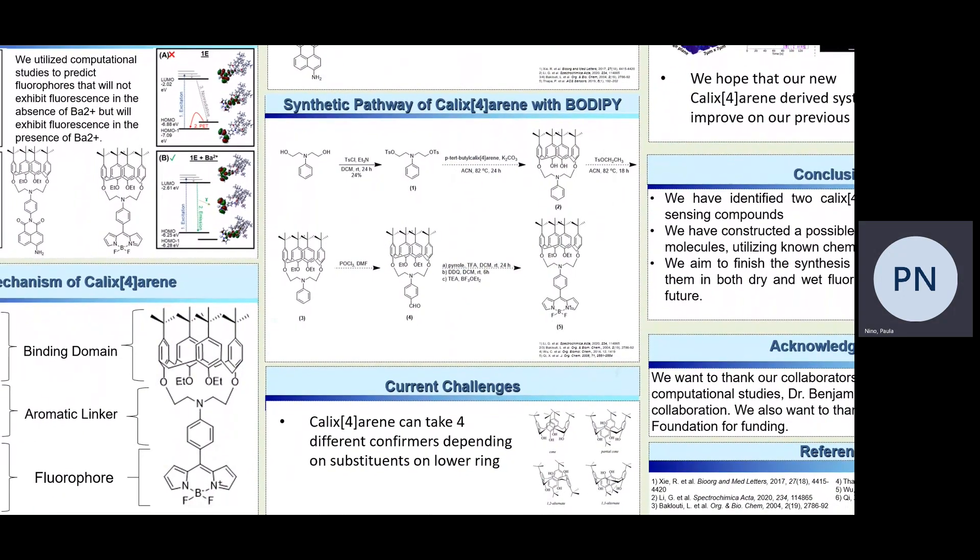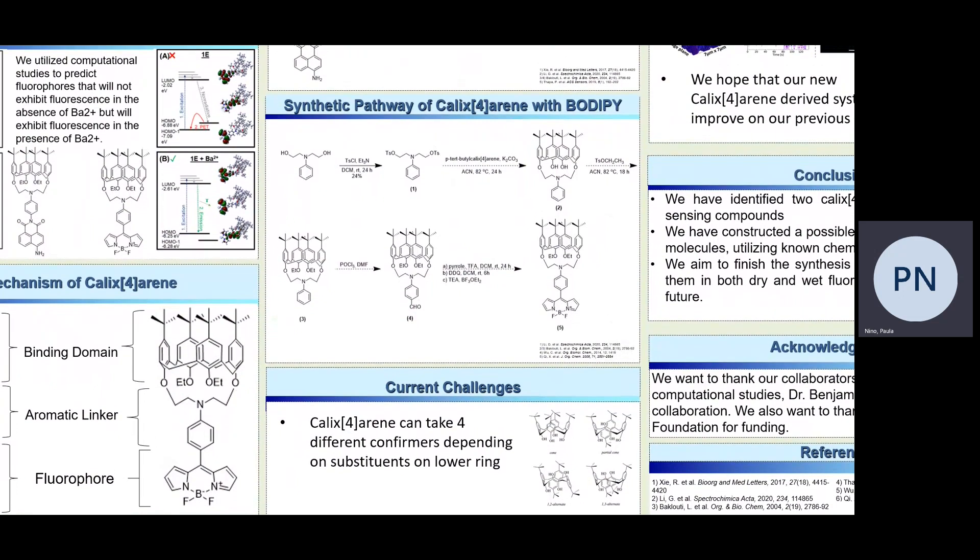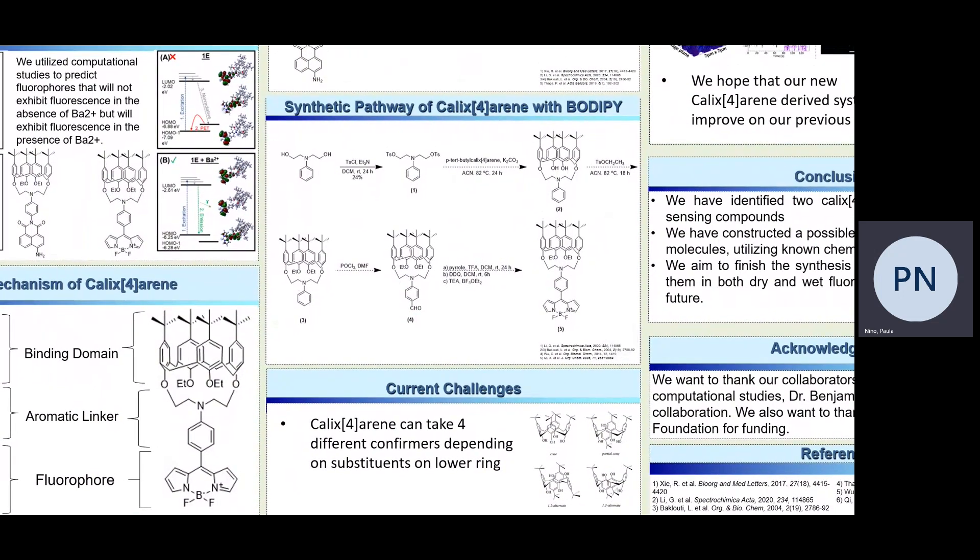As far as challenges, we have acknowledged the challenges in relation to attaining the desired conformer, the cone formation. The conformer is changed based on the substituent that is found on the lower ring. We have observed inconsistent data in relation to smaller versus larger substituents leading to the cone shape, therefore leading us to work further on attaining more consistent results with our desired configuration.